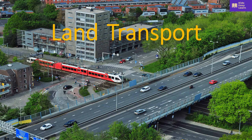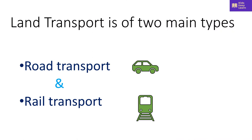Land Transport. Land transport is of two main types: road transport and rail transport.